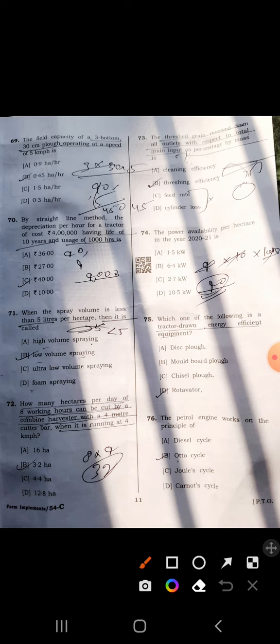Seventieth: answer is C, 40%. Seventy-first: when the spray volume is less than 5 liter per hectare, then it is called C, ultra-low volume spray.